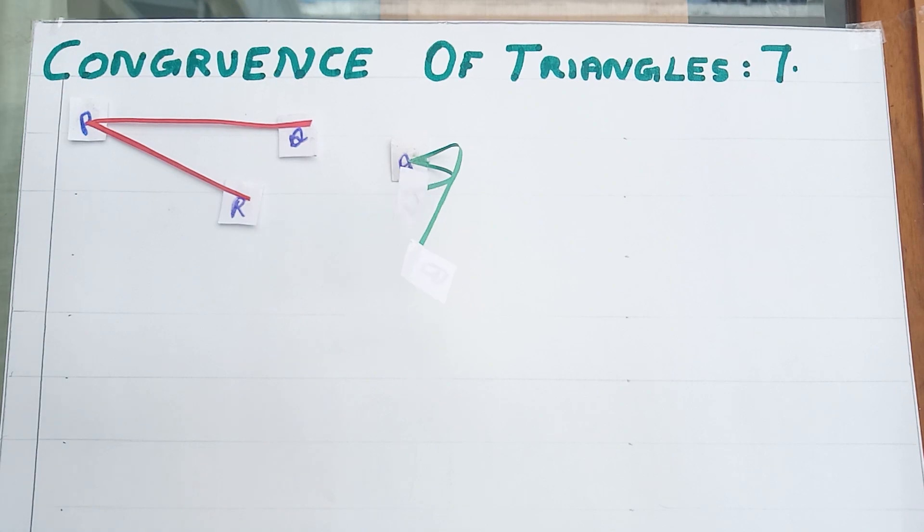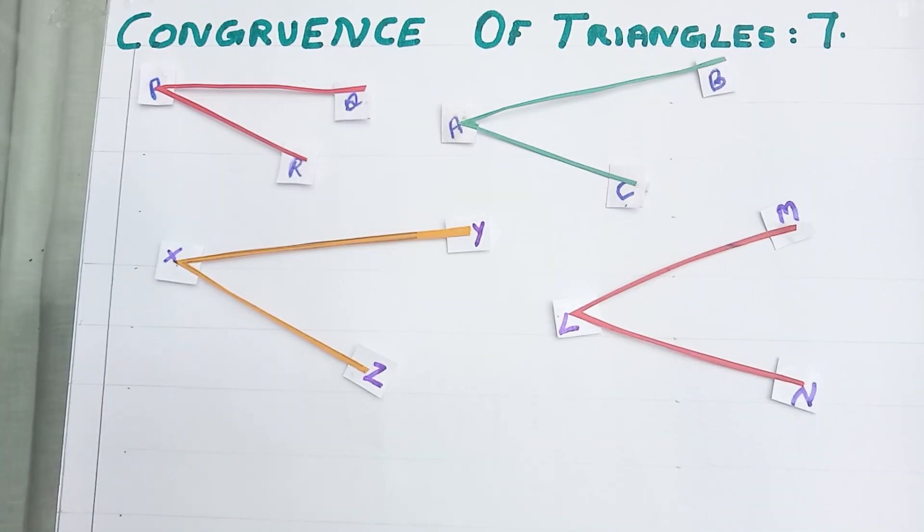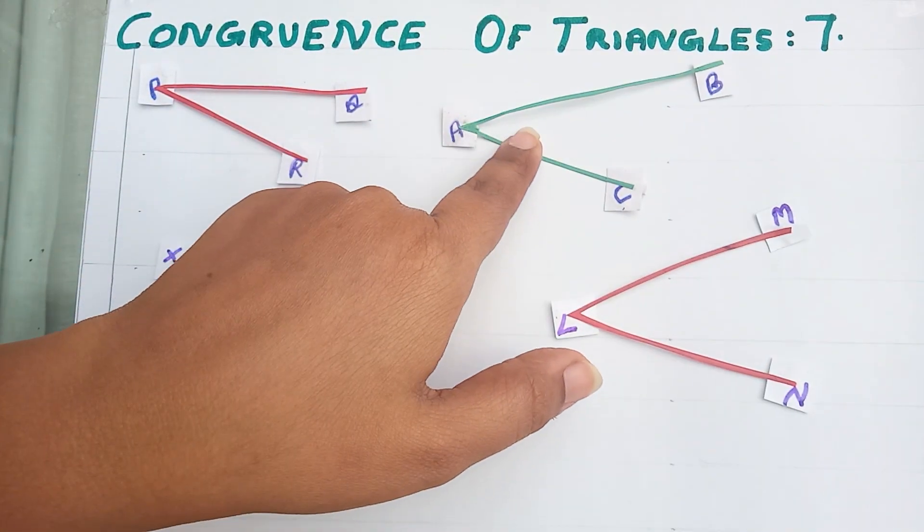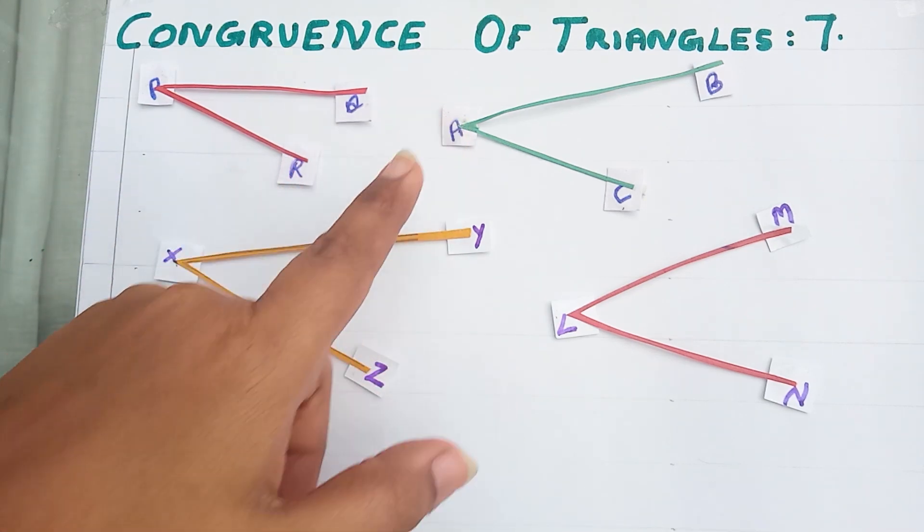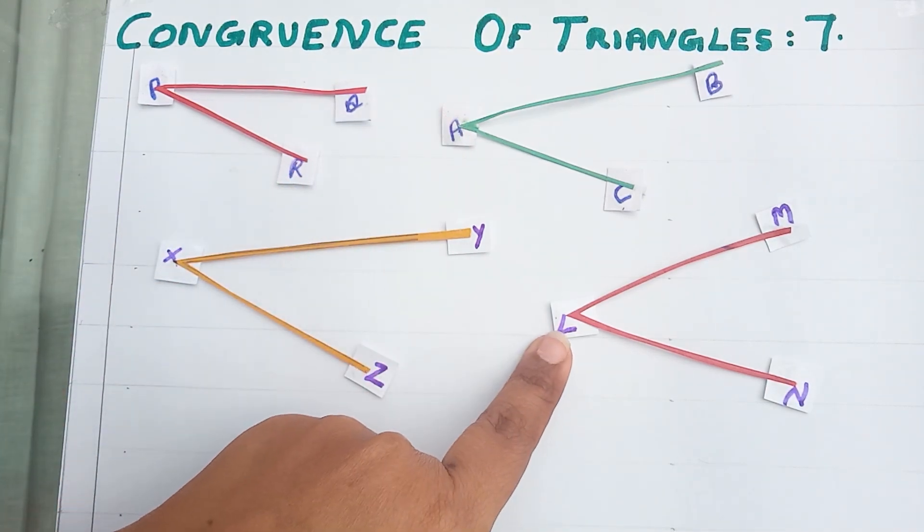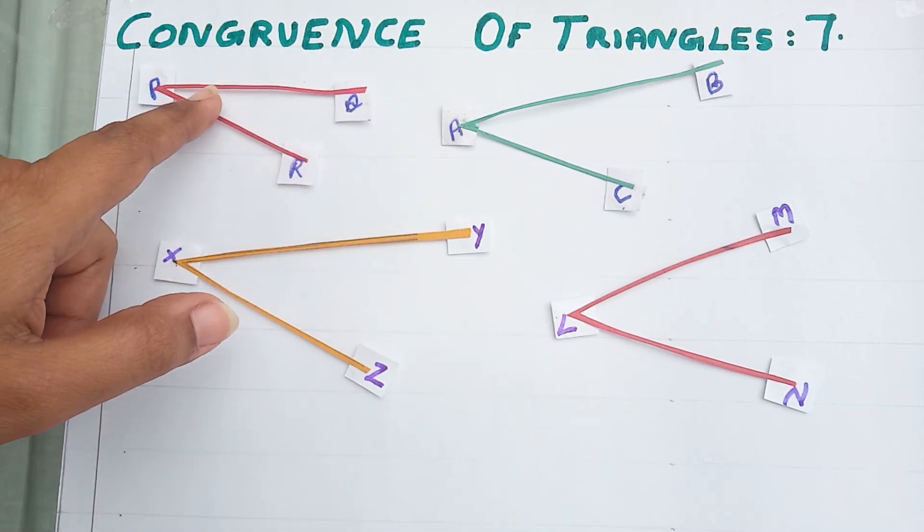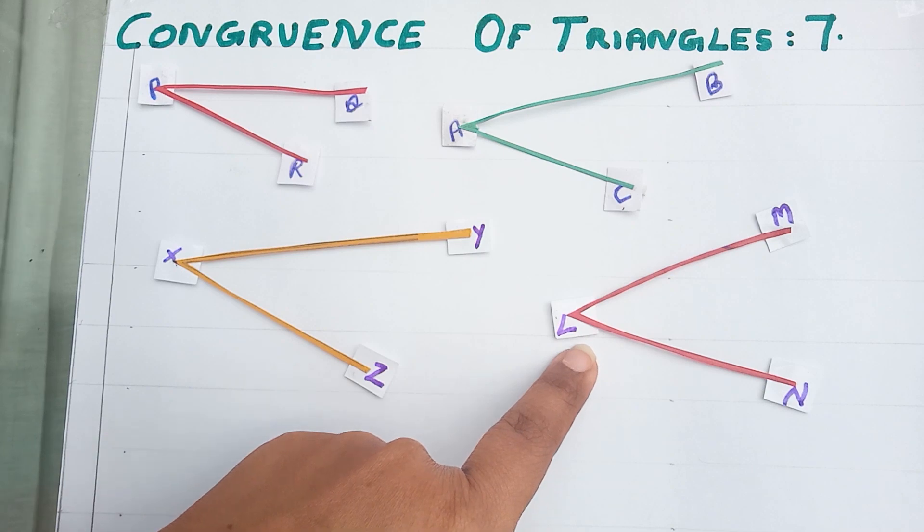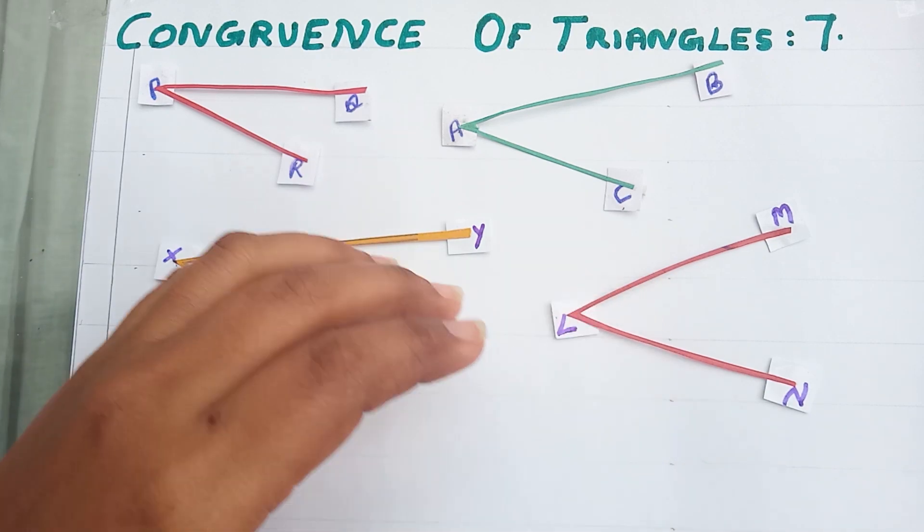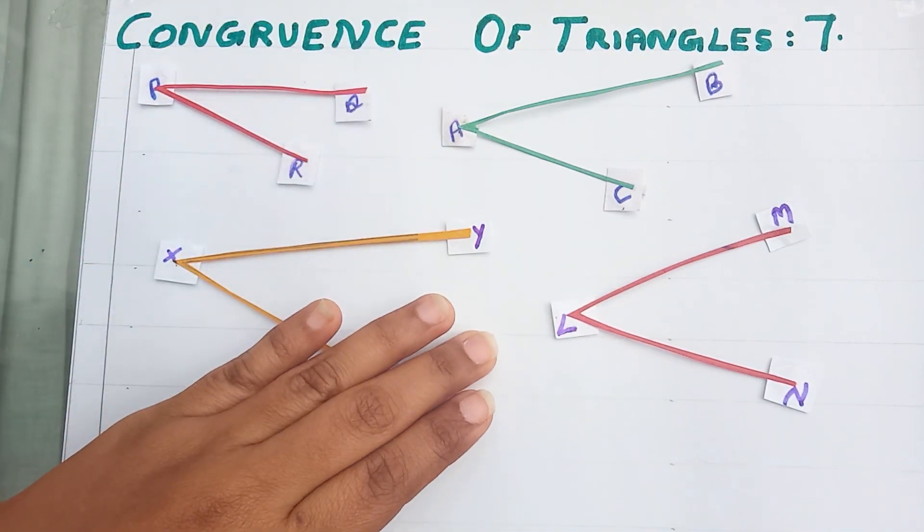Finally these two pairs. This pair is a congruent pair but this pair is not congruent. Measure of these two angles are same. Measure of these two angles are not same. That's why this is congruent and this is not congruent.